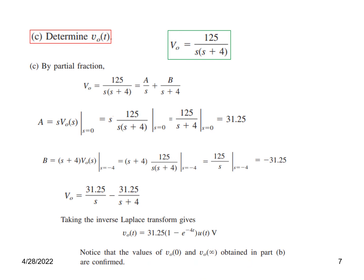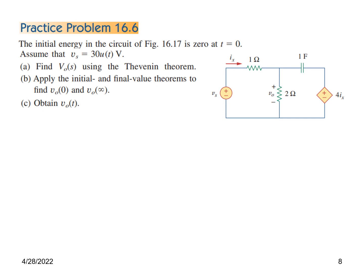Note that the values of V0(0+) and V0(∞) obtained in part b are confirmed here. When t = 0: e^0 = 1, so 31.25 - 31.25 = 0, confirming V0(0) = 0. When t → ∞: e^(-∞) = 0, so the answer is 31.25, confirming the final value. This problem is solved using exactly the same technique.